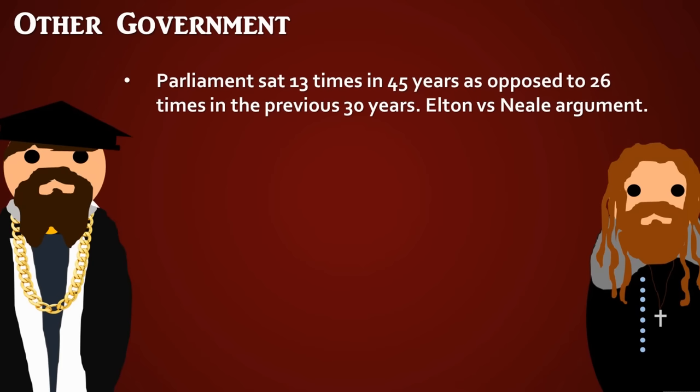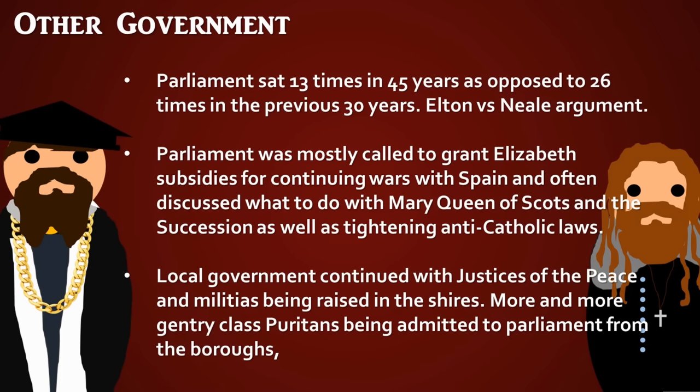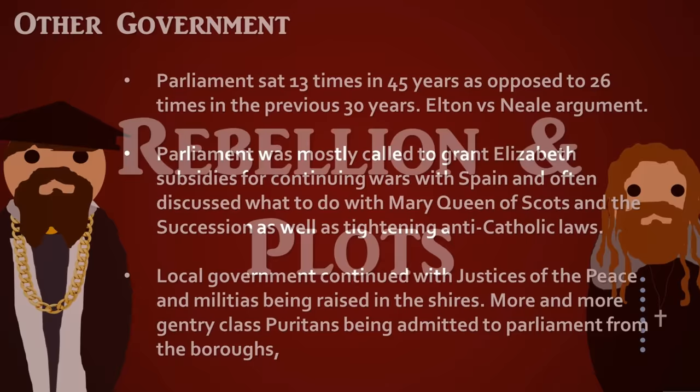There is debate between Elton, who argues for a harmonious relationship between Parliament and the Queen, and Neale, who argues there was discord — a 'Puritan choir' in Parliament that would eventually lead to the English Civil War between King and Parliament. Parliament was mostly called to grant Elizabeth subsidies due to huge economic problems, and to deal with the Mary Queen of Scots Catholic threat. Local government continued with justices of the peace, introduced under Henry VII, and militias raised in the shires. More gentry-class Puritans were being admitted to Parliament from the boroughs — mercantile centres.